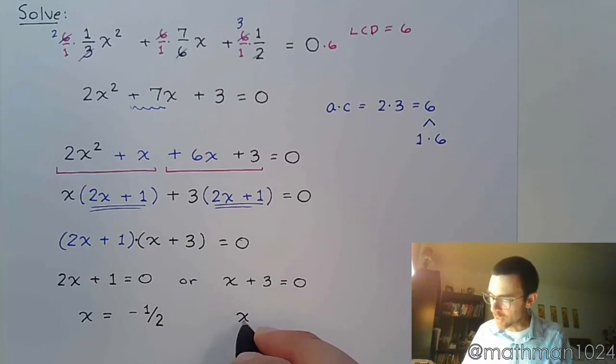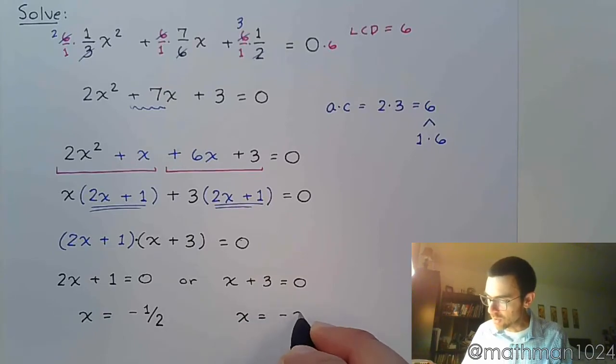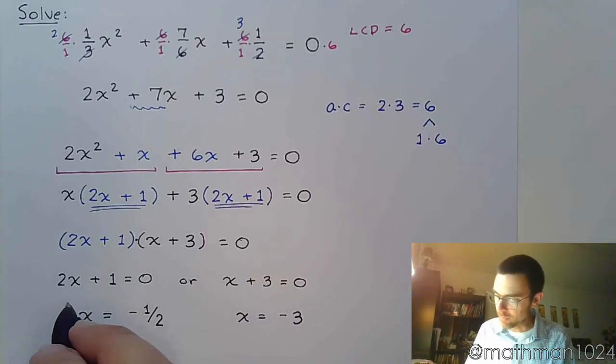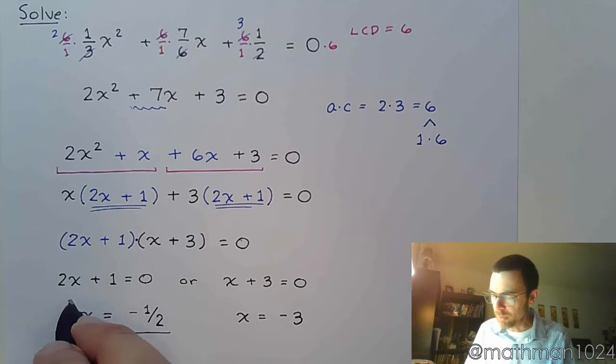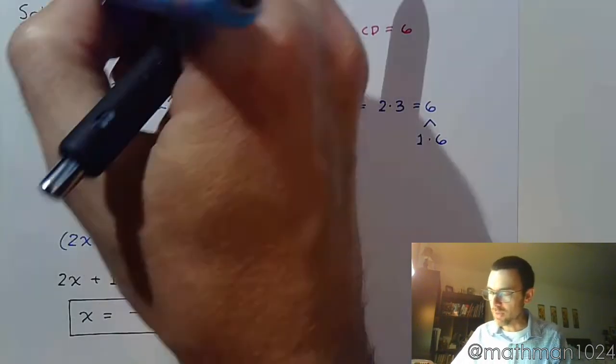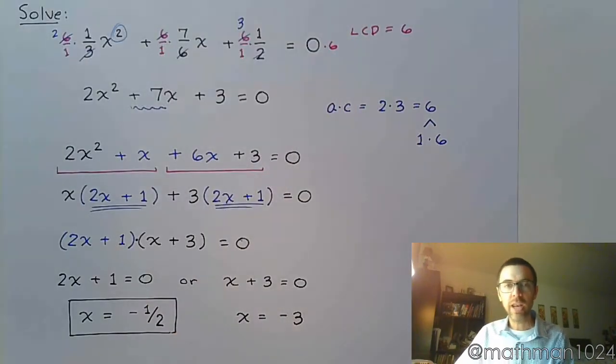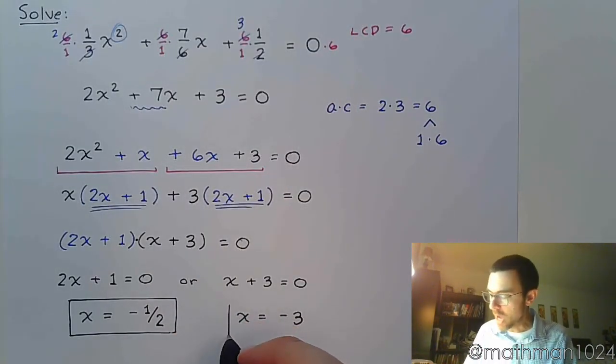Over here, the step that you would take to get x by itself is to subtract 3. So even at the very beginning, I know it had fractions, but it also had this. It had a power of 2. So that power of 2 indicated that we were going to have two solutions.